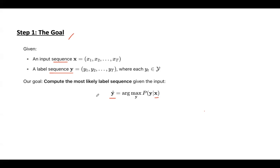Mathematically, we want to find the label sequence Y that maximizes the conditional probability P(Y|X). This is the core objective in various models like hidden Markov models, conditional random fields, recurrent neural networks for sequence labeling, and even transformer models like BERT with a classification head on top.